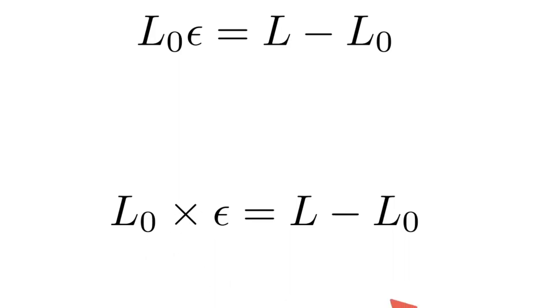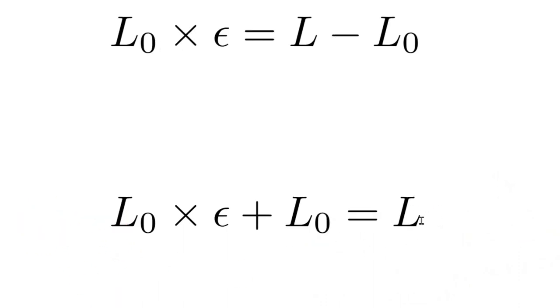And now we only have one more step remaining. If we add L0 to both sides, we will get L all by itself. So we're just going to add L0 to both sides, and now we've solved for length L.